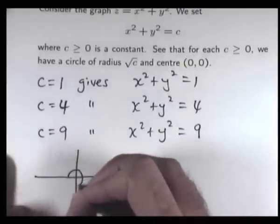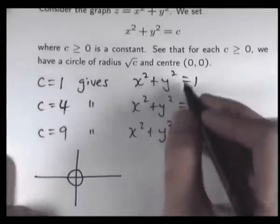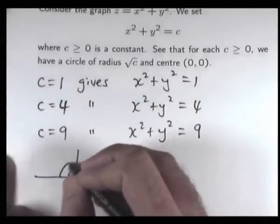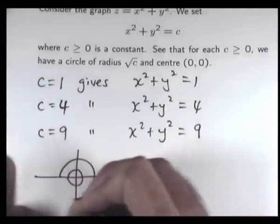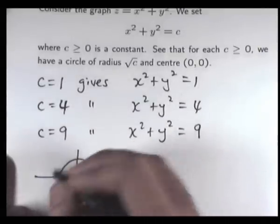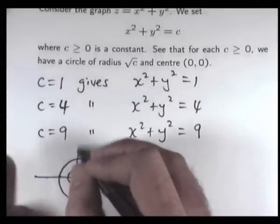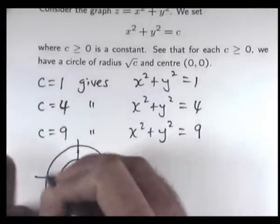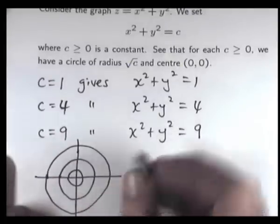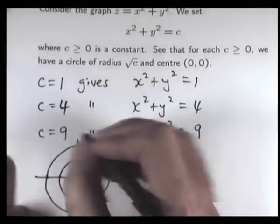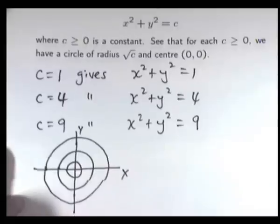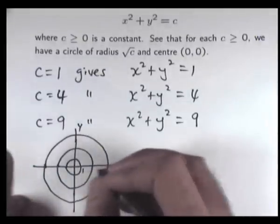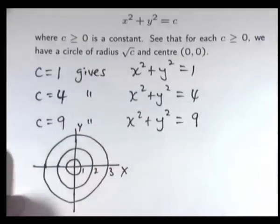I'm drawing these circles in the XY plane — the innermost one, the next one, and finally the outer one. The radii are 1, 2, and 3.